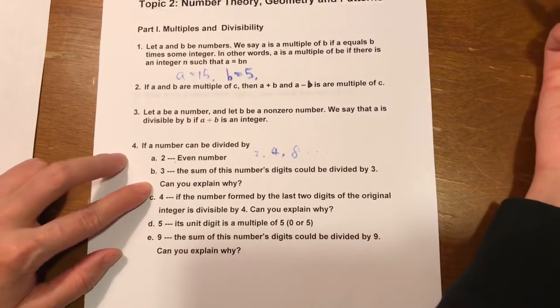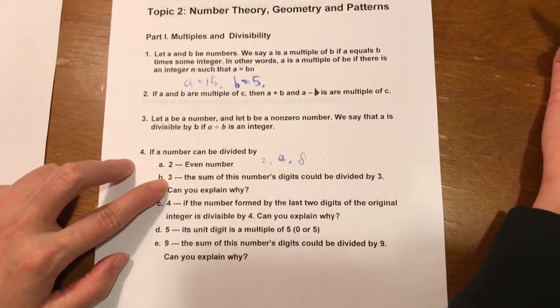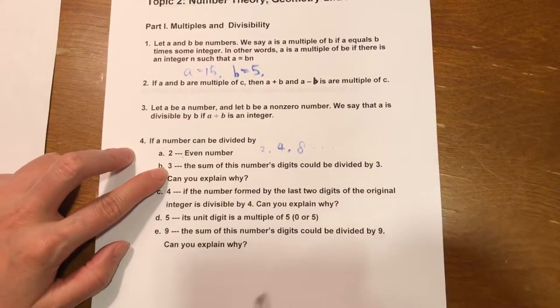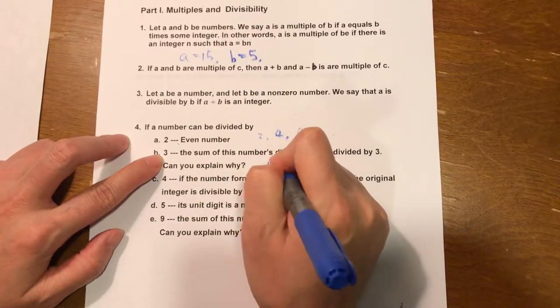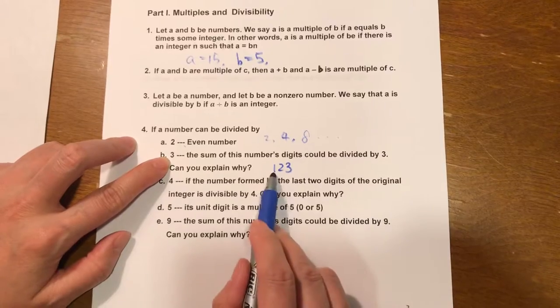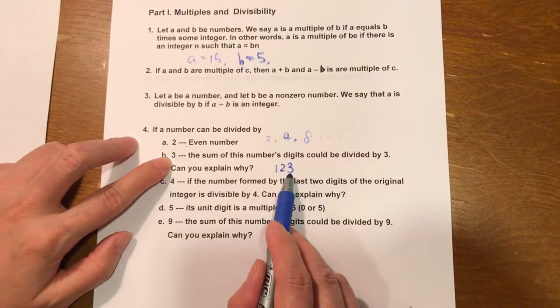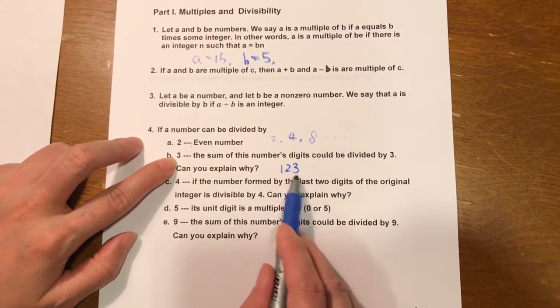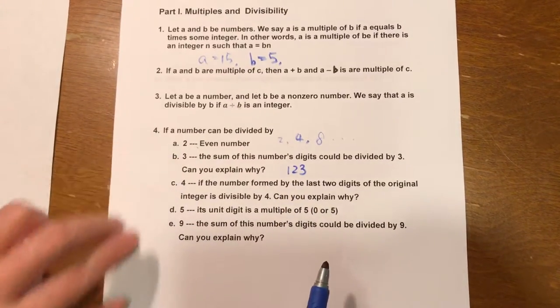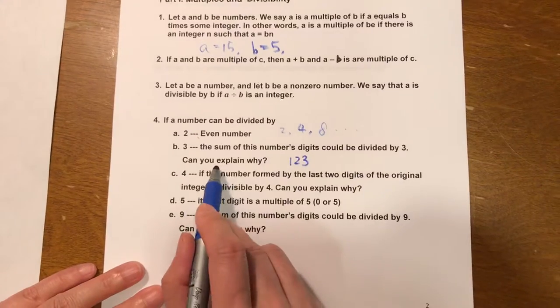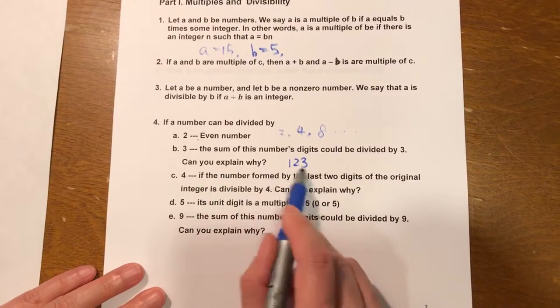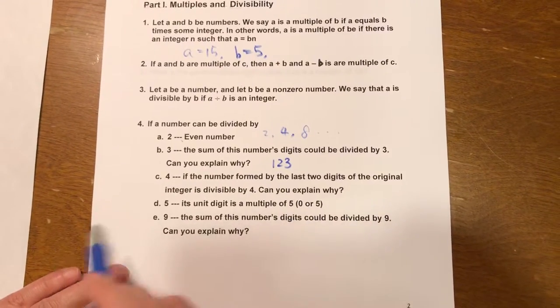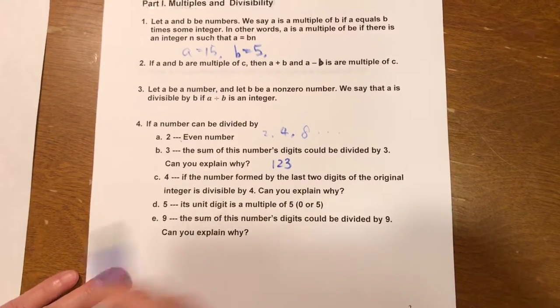Any number can be divided by 3 if the sum of this number's digits could be divided by 3. Let's give an example. Say number 123. We add all the digits up, which is 6, and 6 can be divided by 3. So this whole number, 123, can be divided by 3. In last year's video, we have explained how this works. A student can go back to last year's videos and find out how we can prove this.